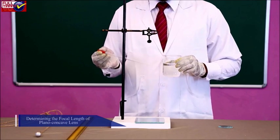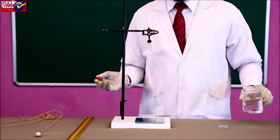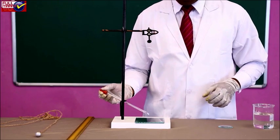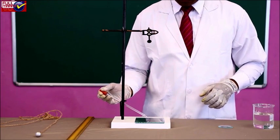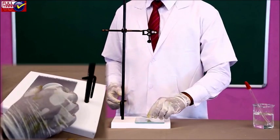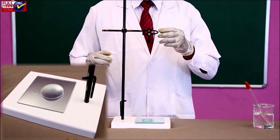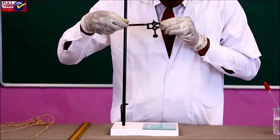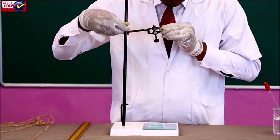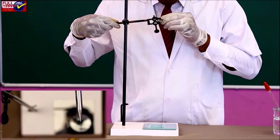Determining the focal length of plano-concave lens formed by water: Fill the space between plane mirror and the lens with water. Use a dropper for this purpose. Adjust the needle so that the tip of its image coincides with the tip of the needle. Remove parallax between the tips.